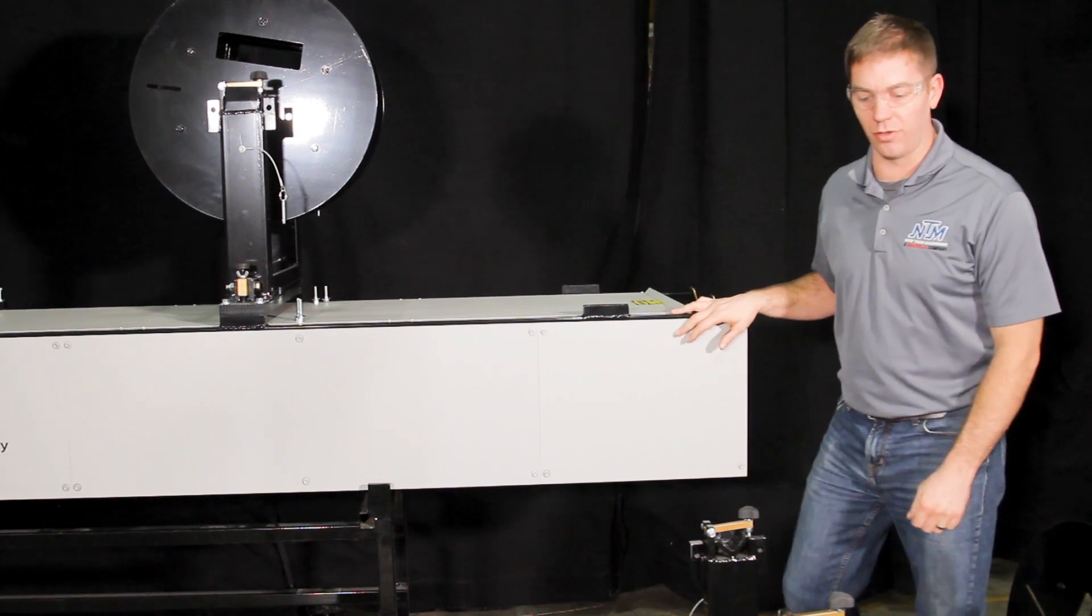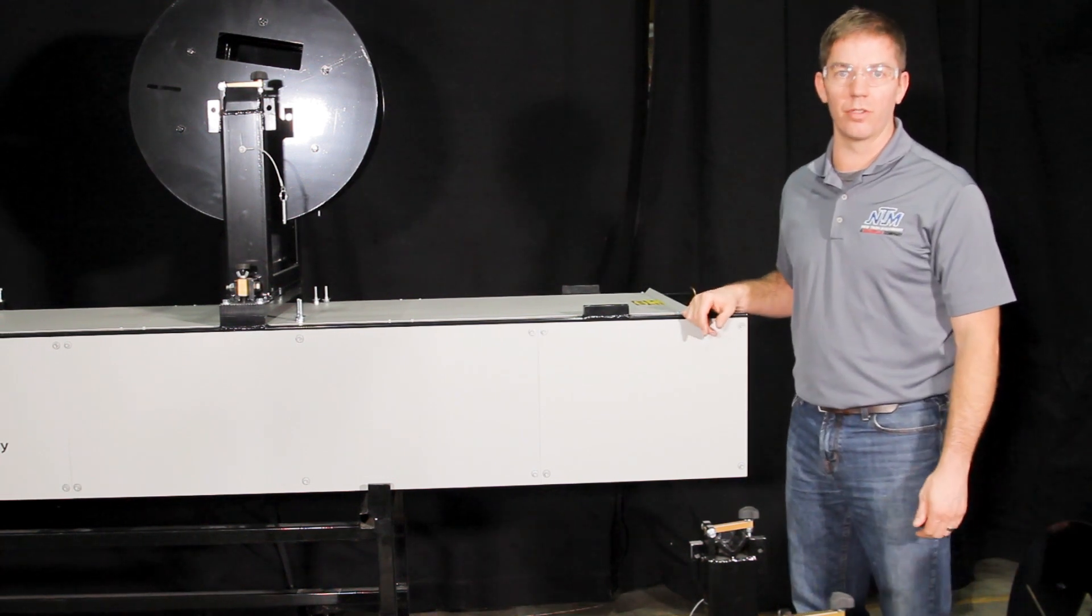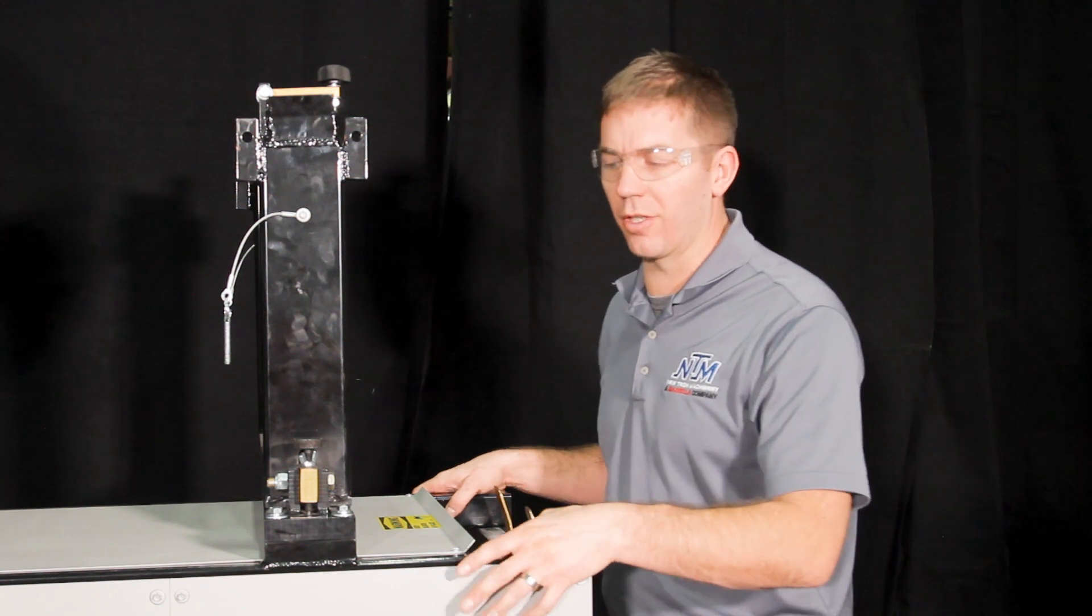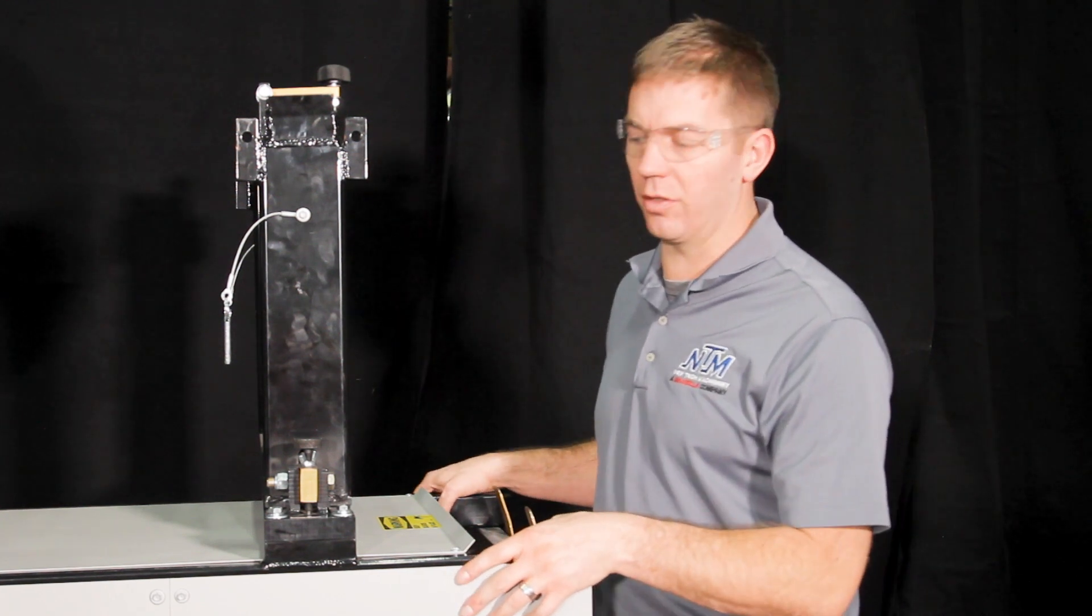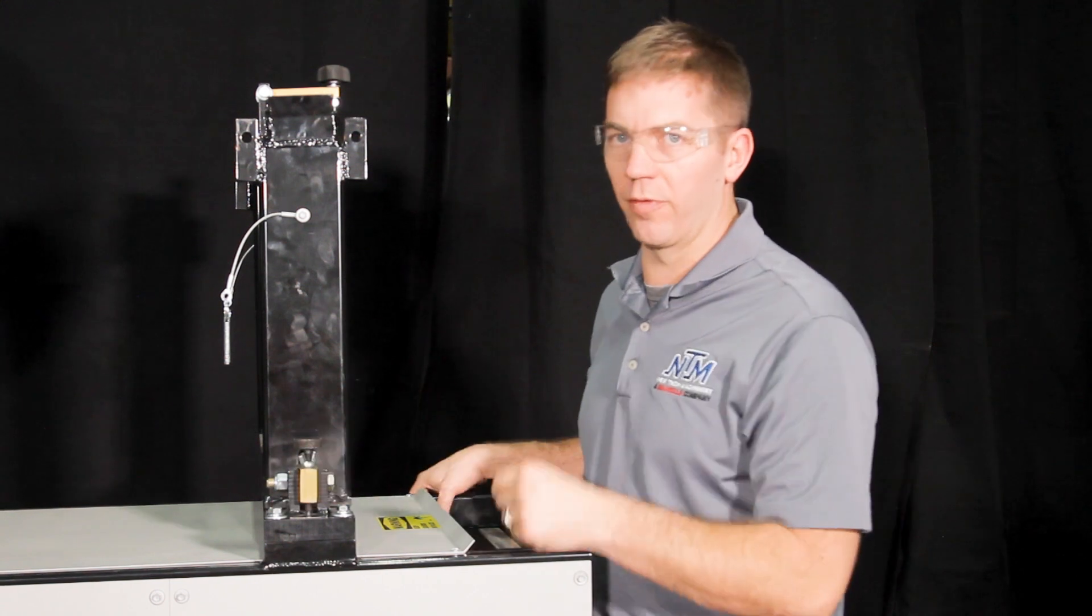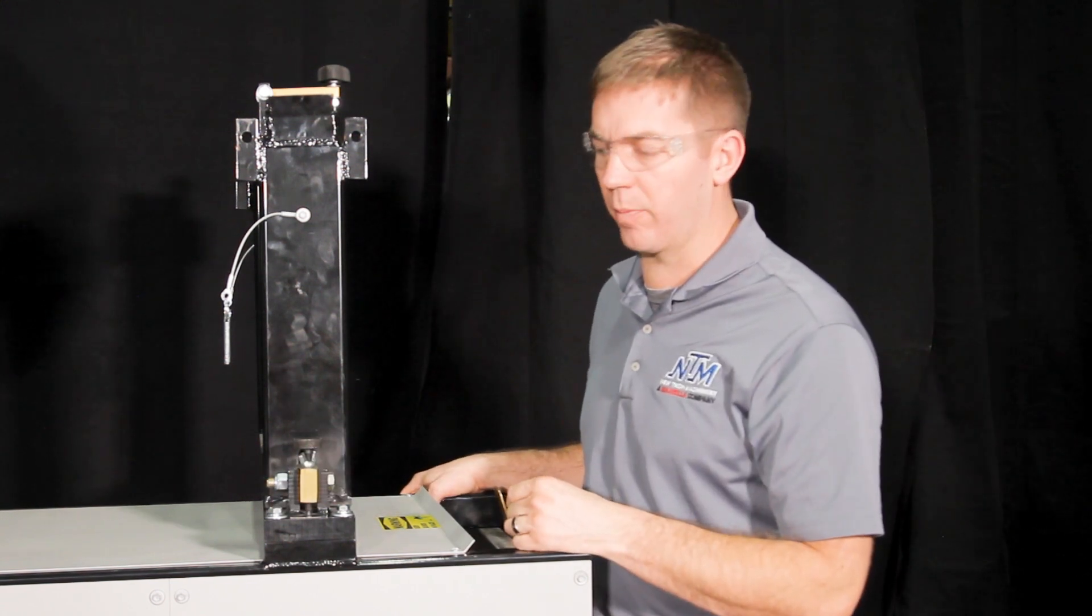Second you want to make sure that you use two people to lift this up onto your gutter machine. Once you have the turnstile on the gutter machine you want to install these two bolts first to help prevent the turnstile from falling off the mounting pads.